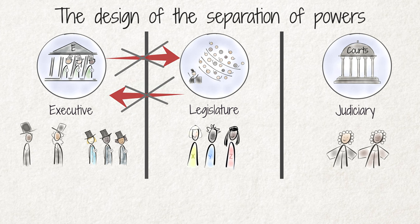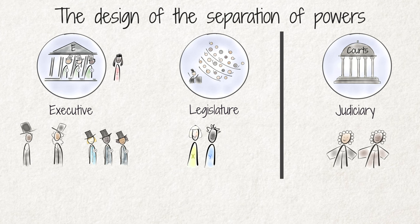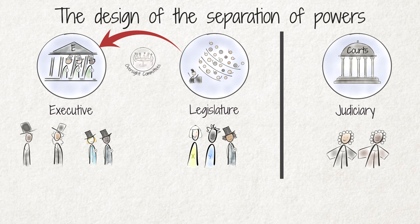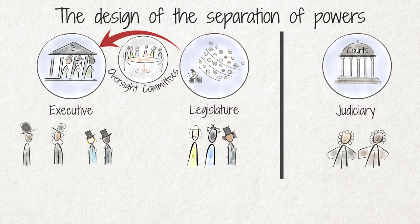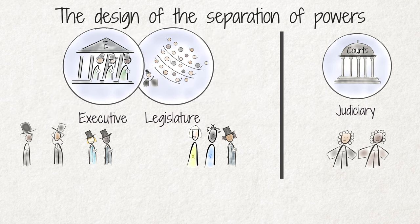In South Africa, we do not have this complete separation of personnel. Individuals can fill positions in two branches at the same time. Members of the Cabinet, representing the executive, are usually also members of the National Assembly or Parliament, which is part of the legislature. The legislature controls the work of the executive through oversight committees, which consist of members of Parliament from different political parties. It is impossible to achieve an absolute separation — some overlapping will happen, especially when members of the Cabinet and the majority of MPs in the National Assembly are from the governing party.